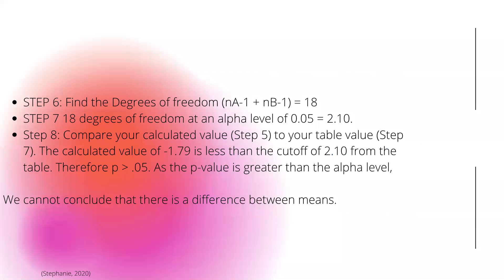Step six was to find the degrees of freedom: nA minus 1 plus nB minus 1, which equals 18. Then we have 18 degrees of freedom at an alpha level of 0.05. Remember using the 5% alpha level, so that equals 2.10.